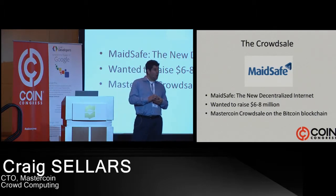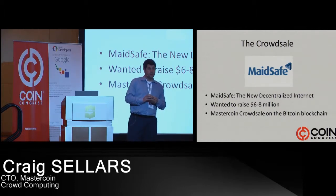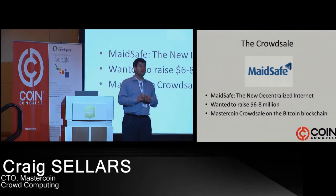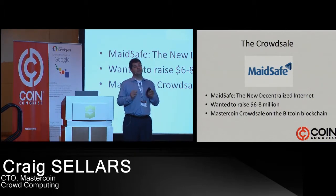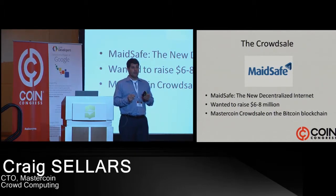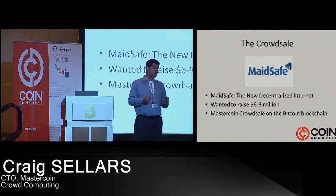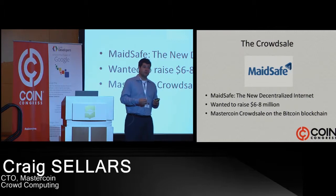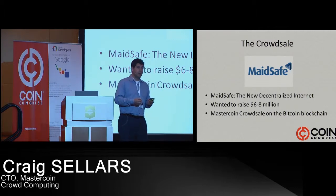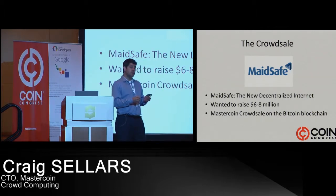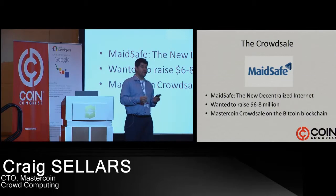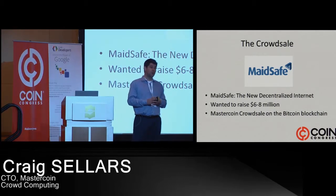Speaking with BitAngels and David Johnson — who, if you've heard David Johnson's law, which is that if something can be decentralized it will be decentralized — he realized that their monetization mechanism could be made more robust if there was a token aspect to it. Therefore, they created something called SafeCoin, which is the resource that you earn by providing your resources to the network. They came up with a mechanism to sell one-tenth of those SafeCoins using the Master Protocol.